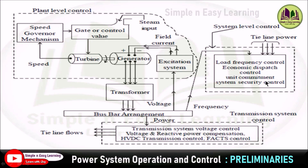The interconnected system can tolerate large load changes with small frequency deviation with the help of spinning reserves. The spinning reserves can be shared among the interconnected areas during anticipated load demands. This is all about the system security control.